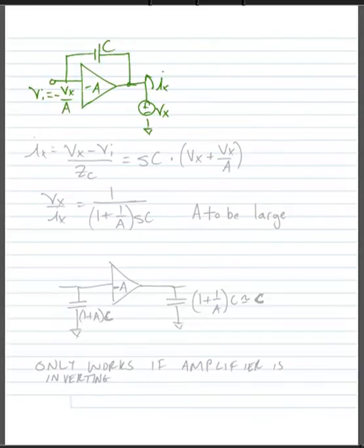And so we can write a current expression, Ix is equal to Vx minus Vn divided by Z sub C, which is equal to SC times Vx plus Vx over A. And rearranging to our form Vx over Ix, we have 1 divided by 1 plus 1 over A times SC.